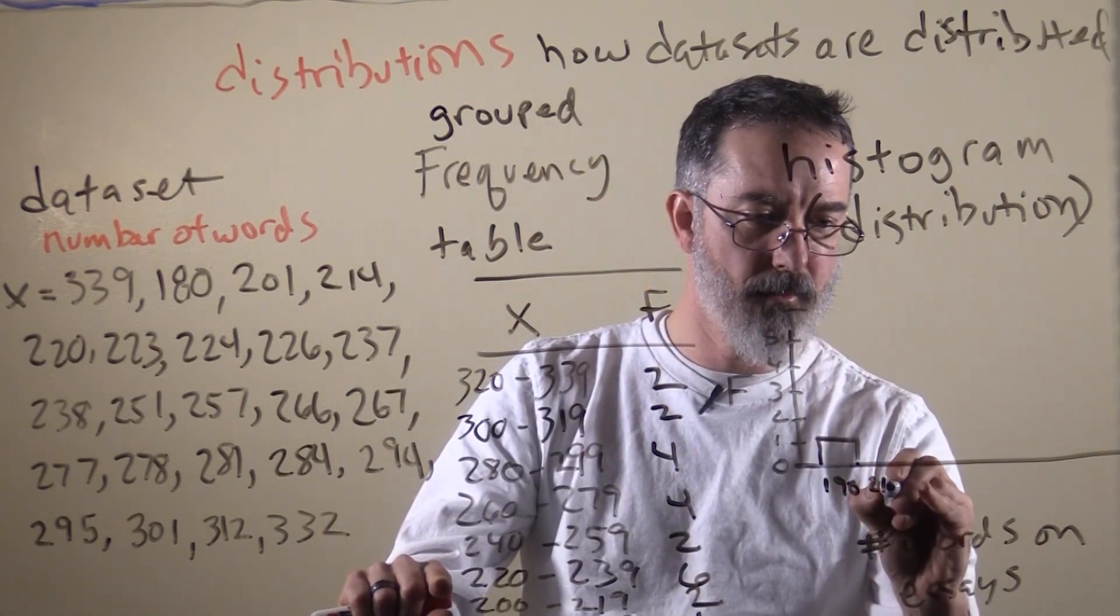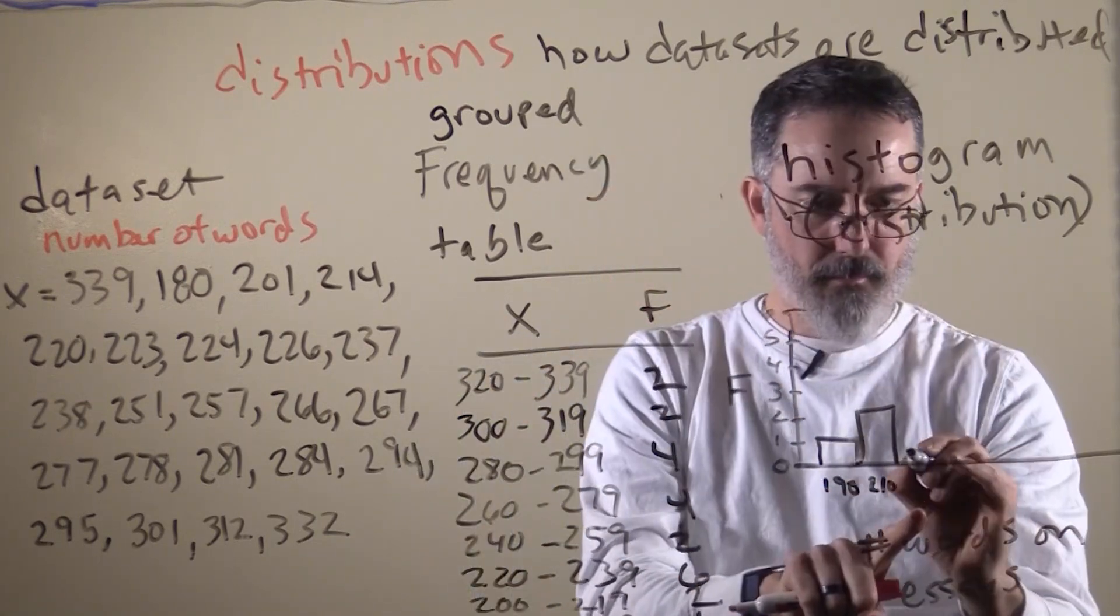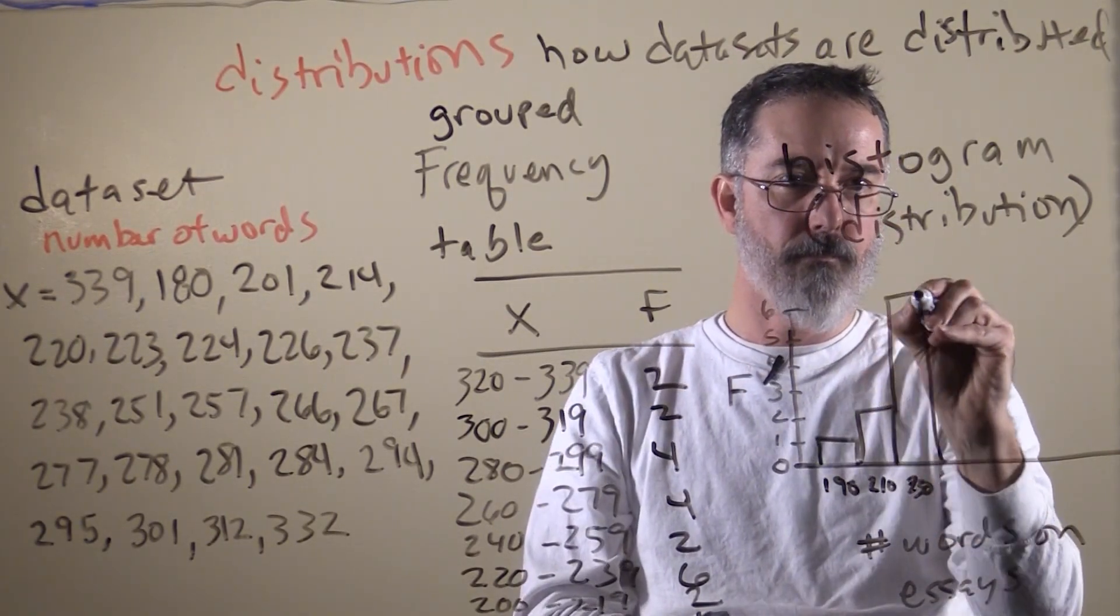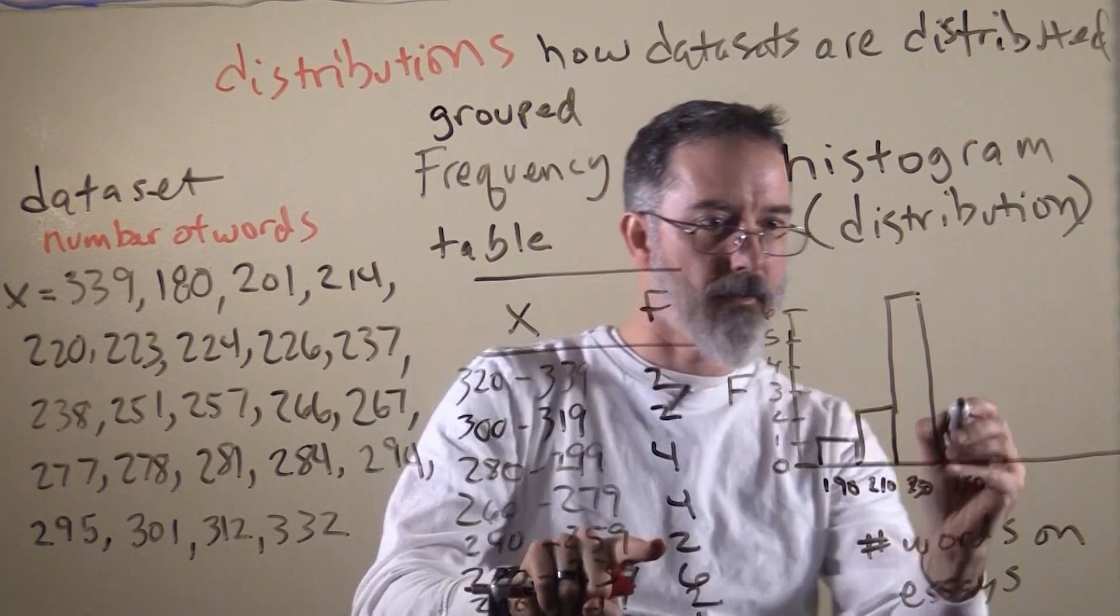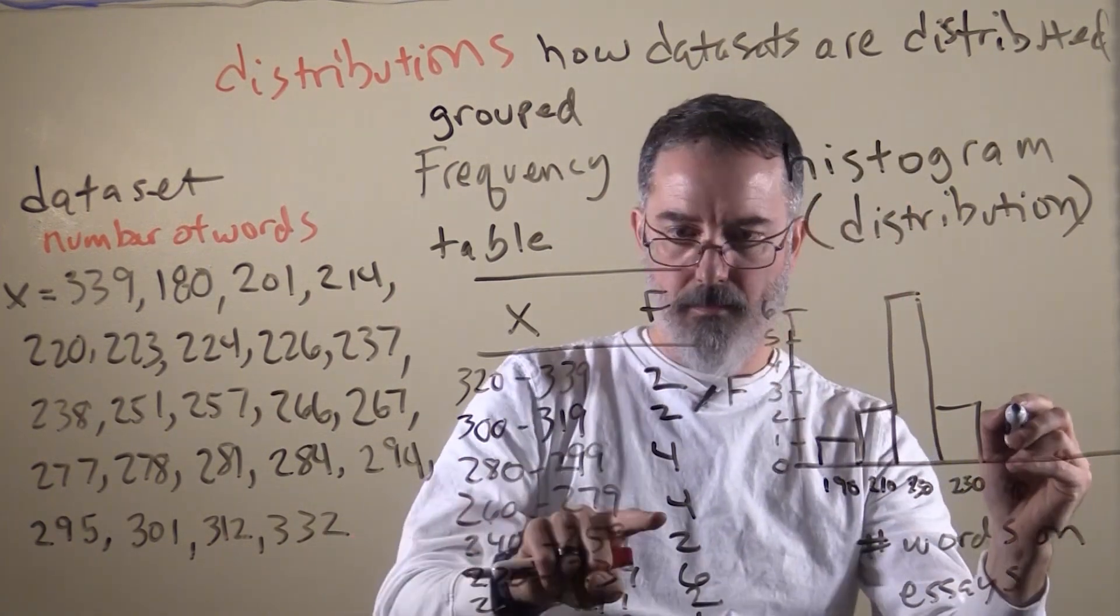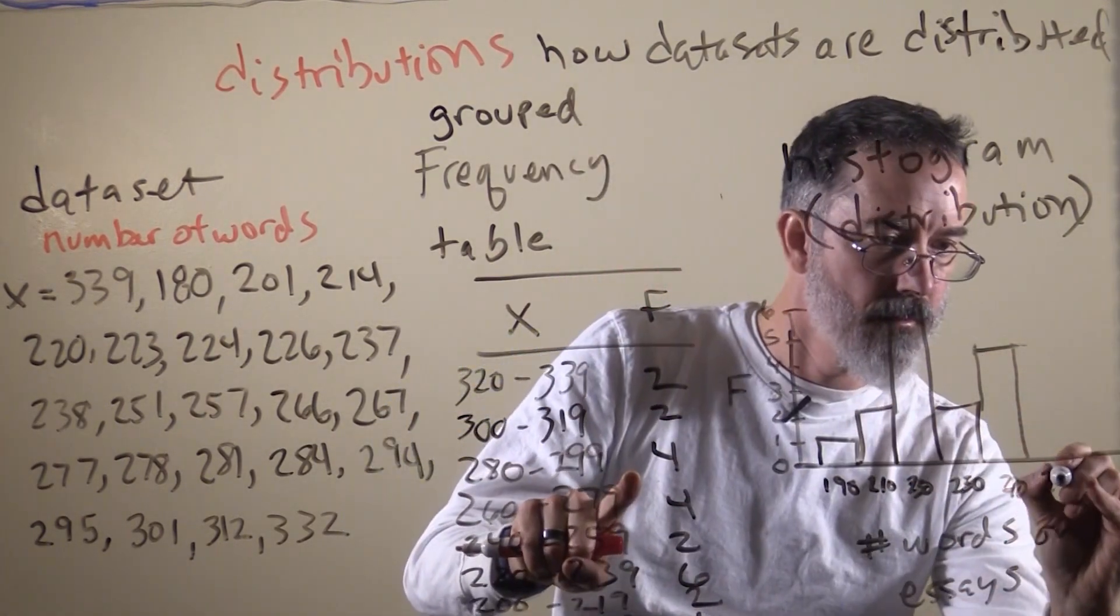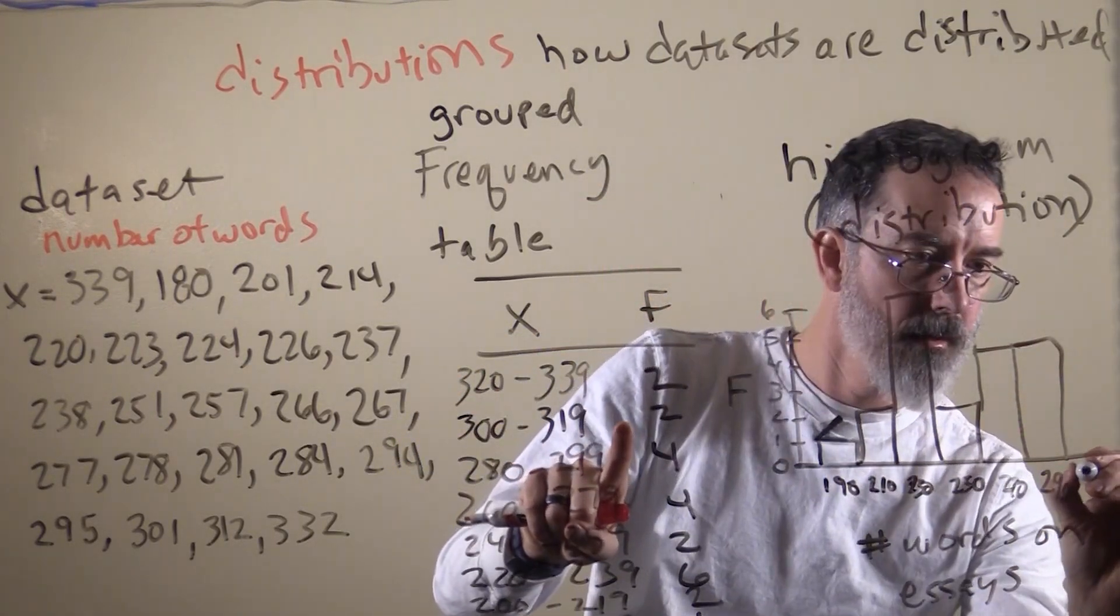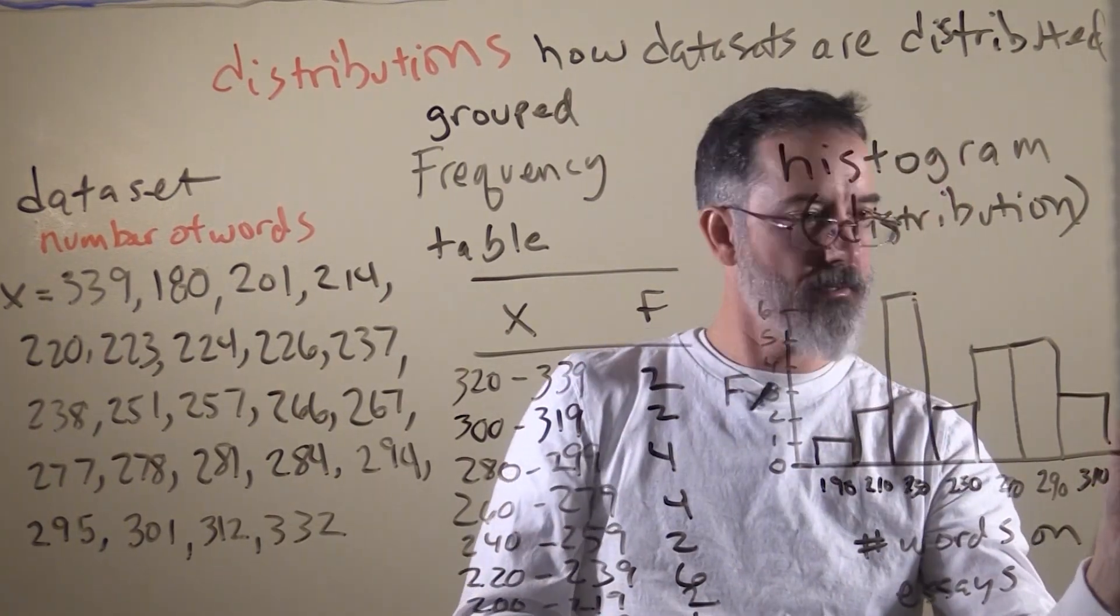Then the next one would be 210. That goes up to 2. Then 230 goes up to 6, all the way up. Then 250 goes up to 2. 270 goes up to 4. 290 also goes up to 4. 310 goes up to 2. And then 330 goes up to 2 also.